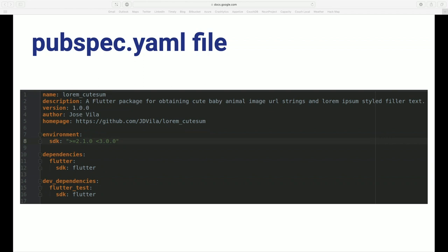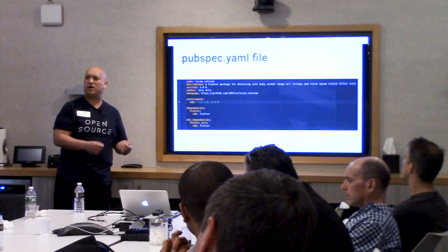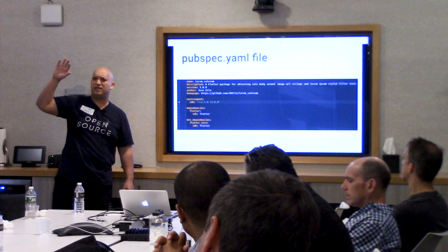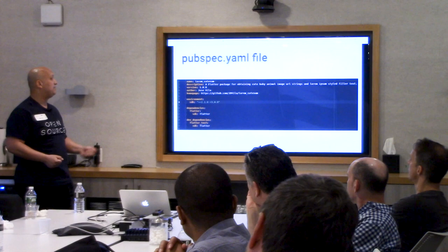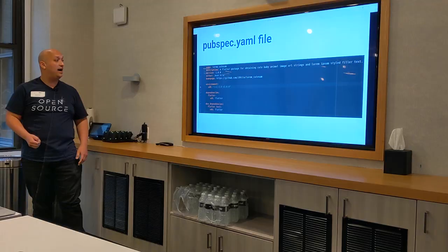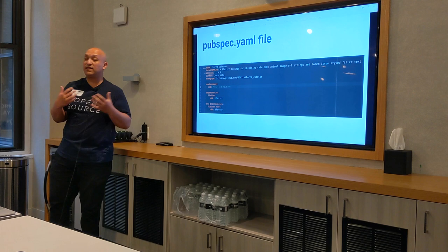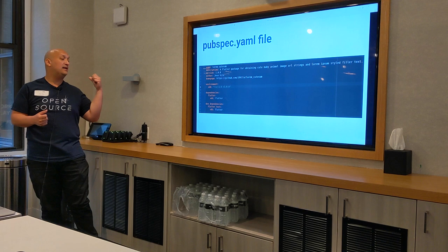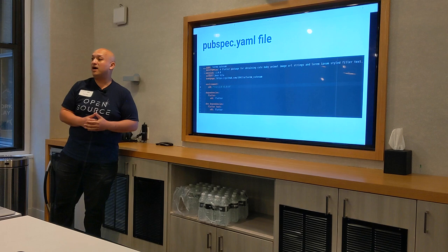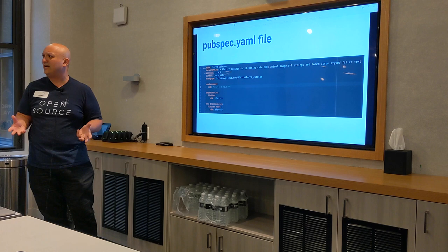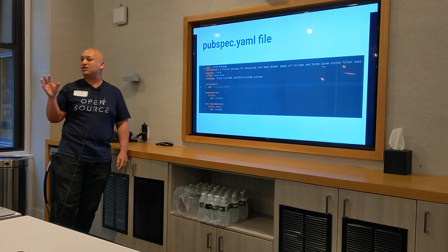This is an example of a pubspec.yaml file. We see the typical keys of name, description, and version. You'll notice I started with 1.0.0 rather than 0.0.1. We're following the concept of semantic versioning — major, minor, patch. If you're not sure whether the package you're making is ready for prime time, you could keep it at 0 major, 0 minor, then patch. But if you're confident, you can start with 1.0. It actually helps with your score on the pub website.